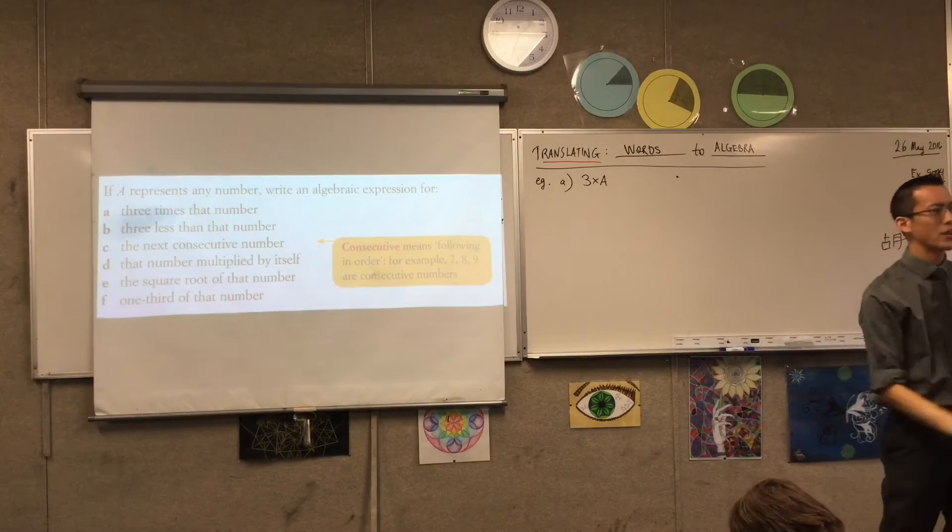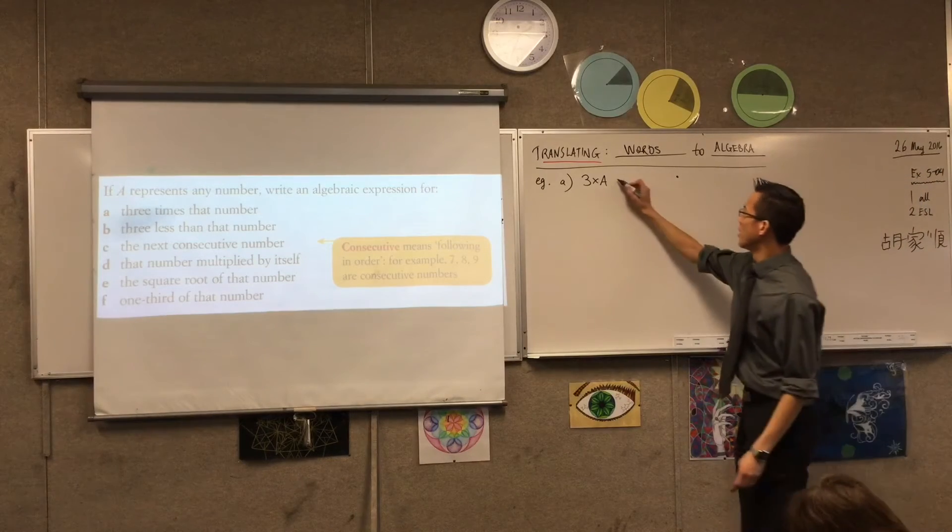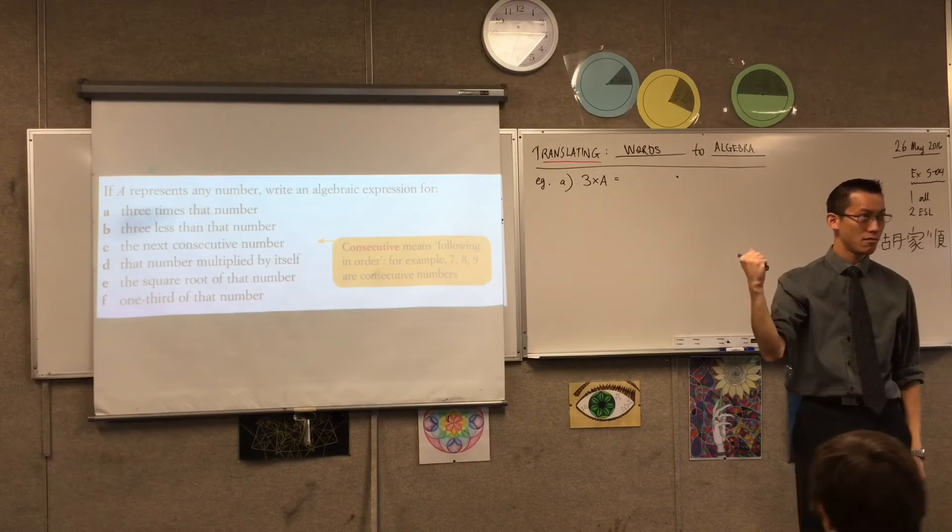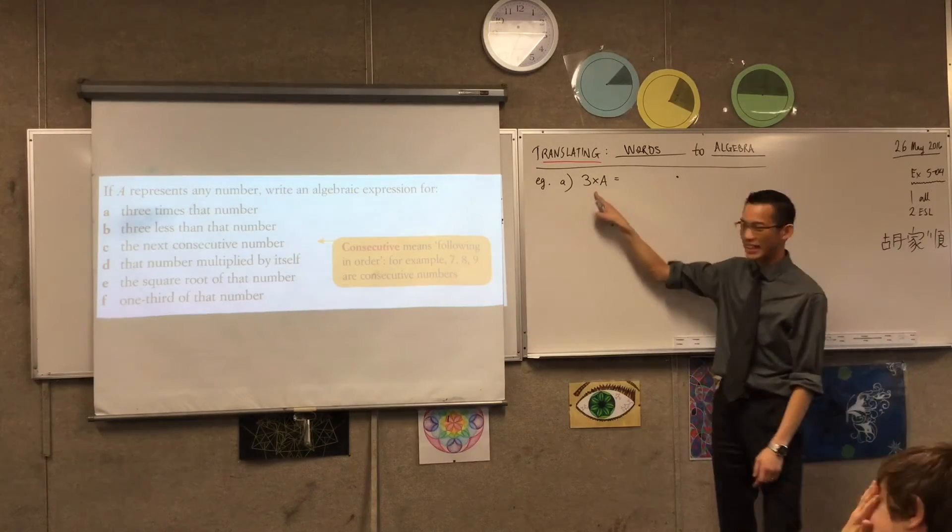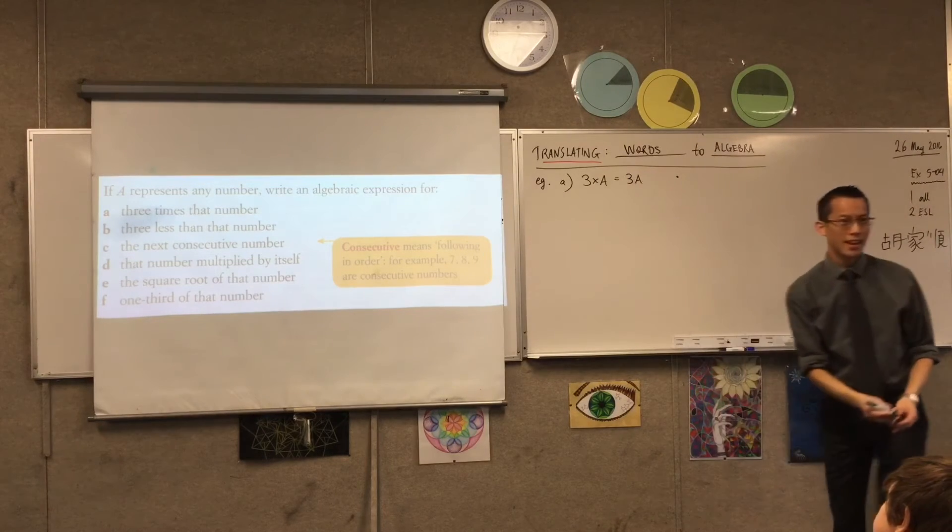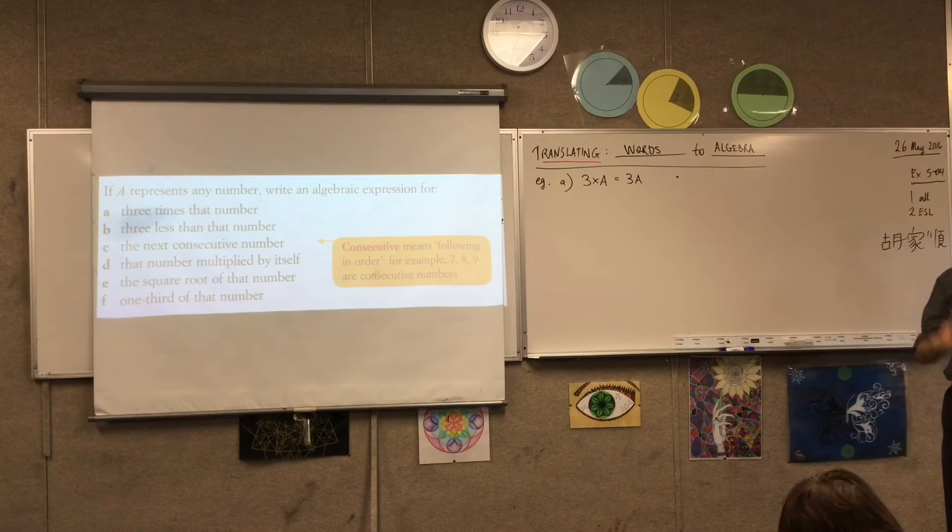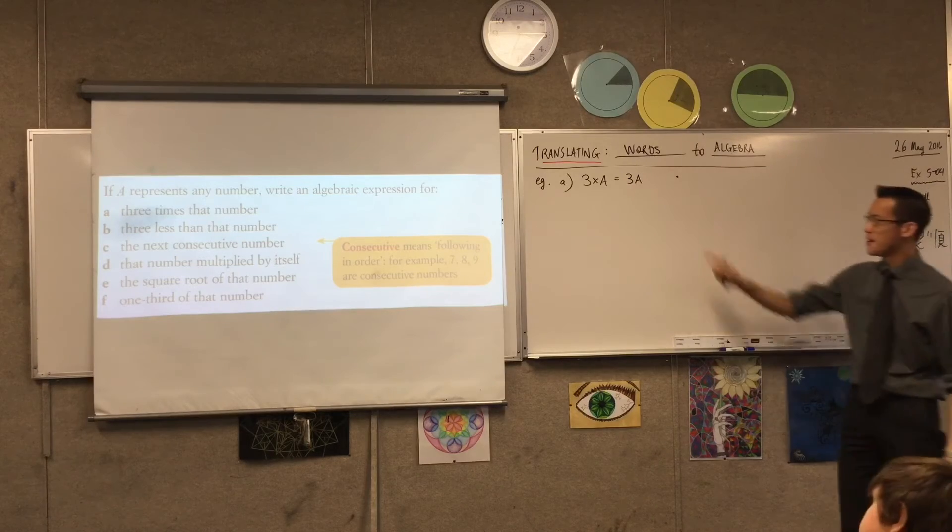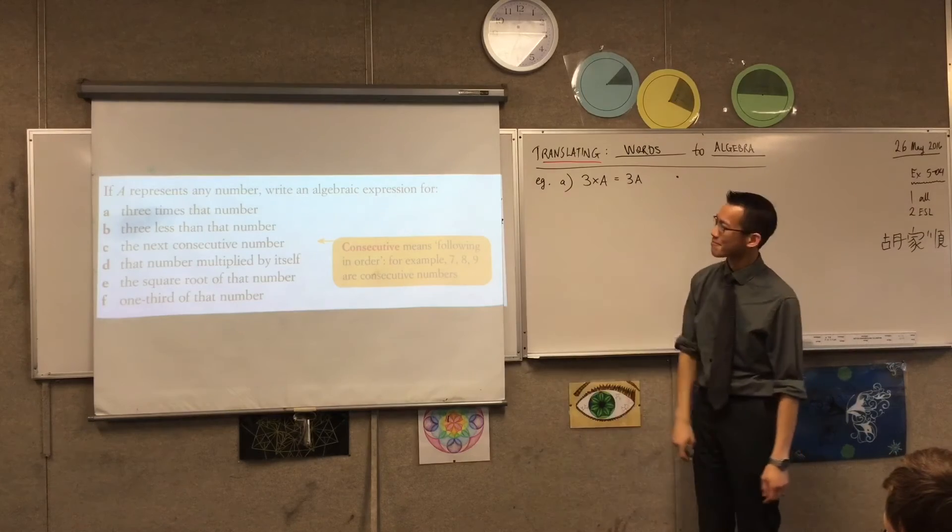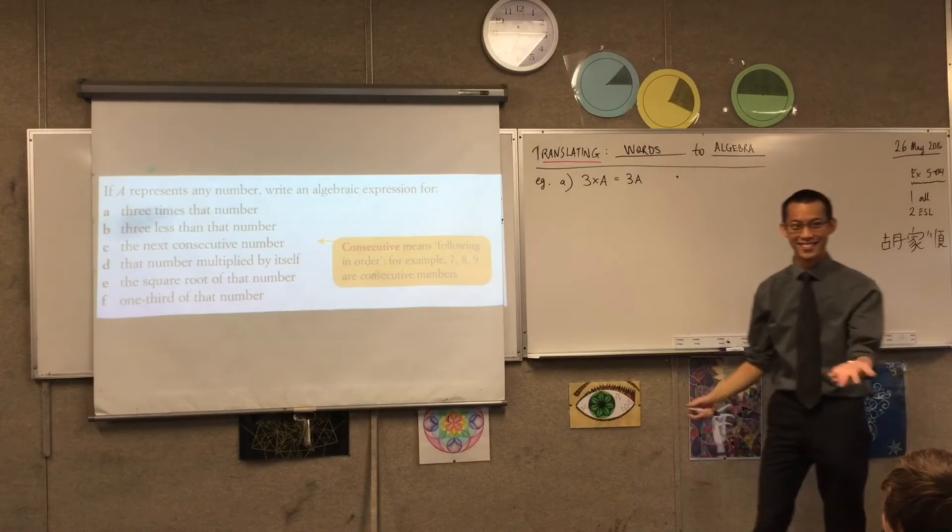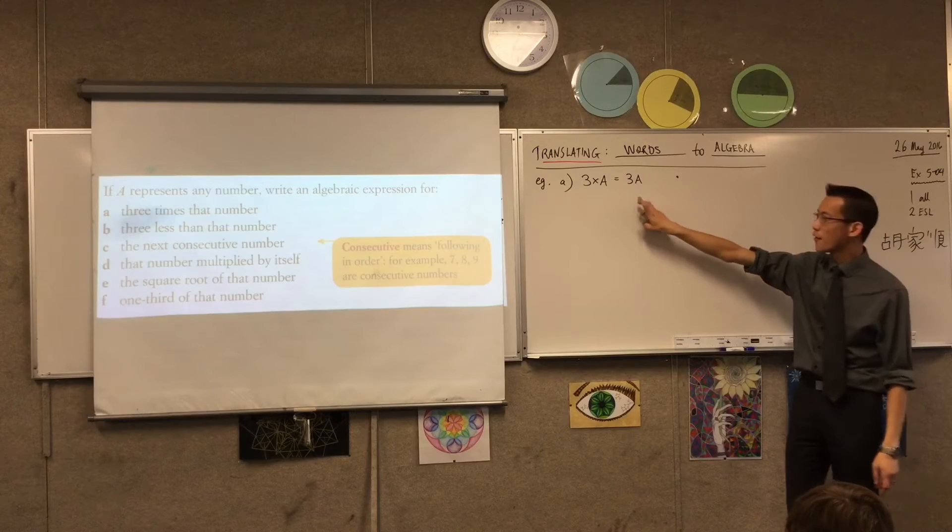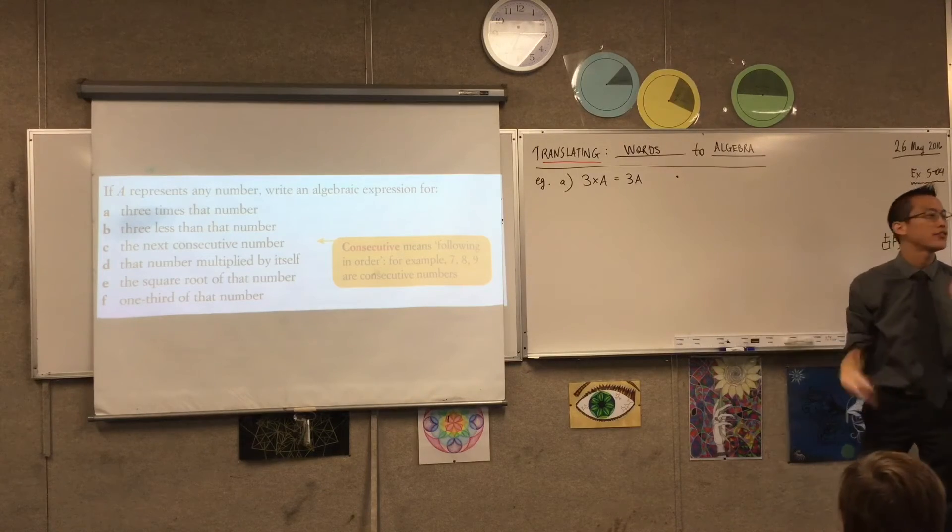Three times a. But we learnt last time, we can abbreviate that even more. You know, if I say, I've got three of these whiteboard markers. It would be the same to say, I have three whiteboard markers. So we kind of leave this times out. And we just write 3a. Now, let me point out here, the first reason why we like doing this. Which is more concise? This or that? It's a clear one, right?